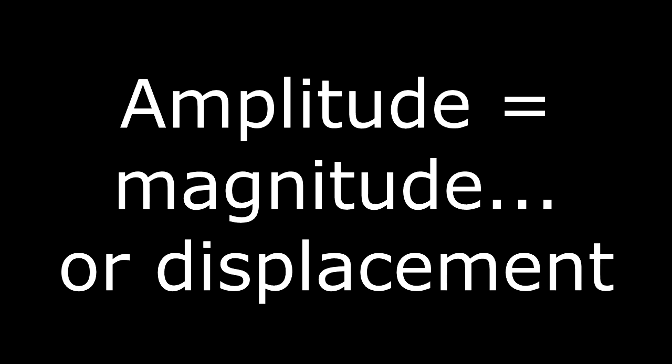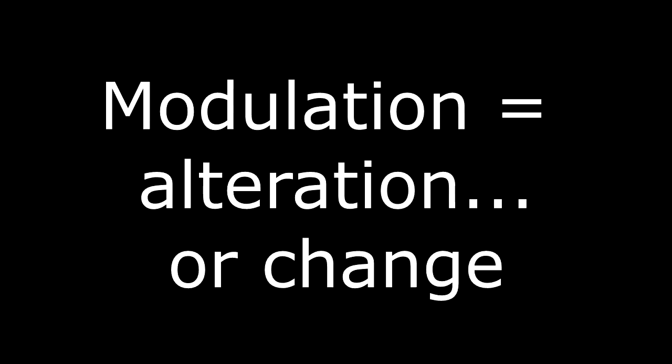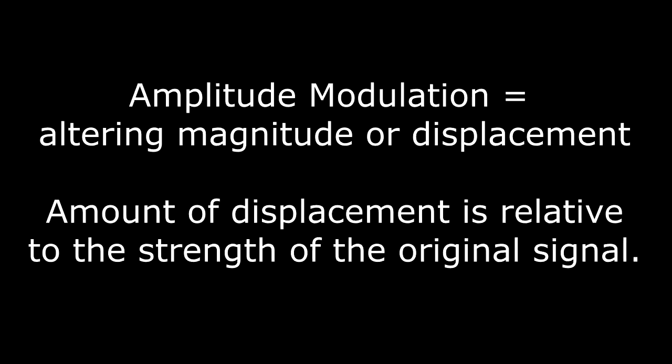AM, or amplitude modulation. Another word for amplitude is magnitude, or in some cases, displacement. Another word for modulation is alteration, or change. So in amplitude modulation, we're altering the magnitude or displacement of some phenomenon, and the amount of displacement is relative to the strength of the signal doing the modulation.